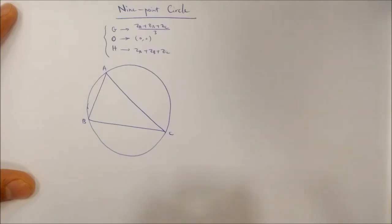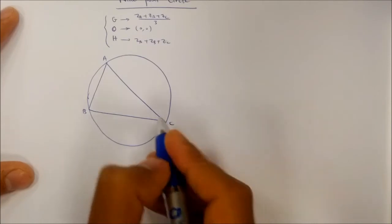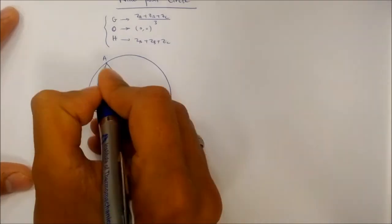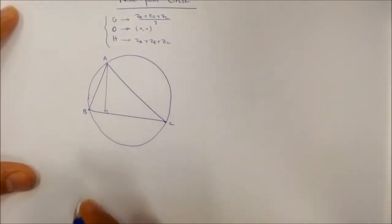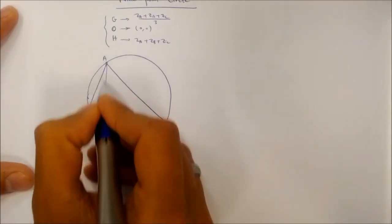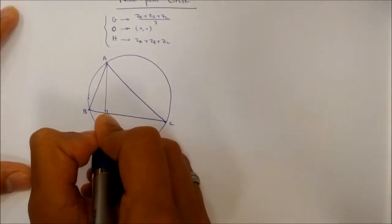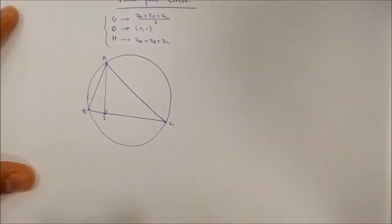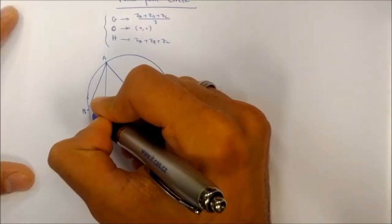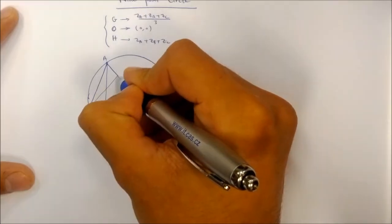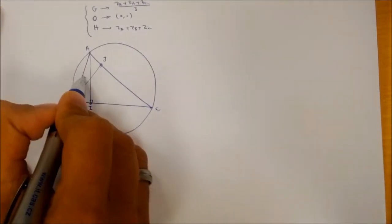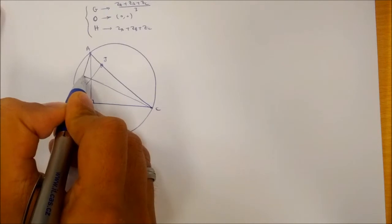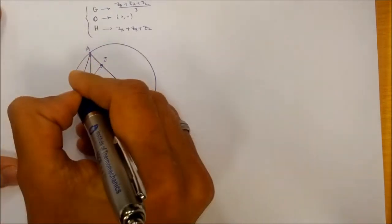The first three points are the feet of the altitudes from each of the vertices. I consider the line from A perpendicular to the opposite side — the point I. The other altitude gives point J, and the third altitude from C gives point K.